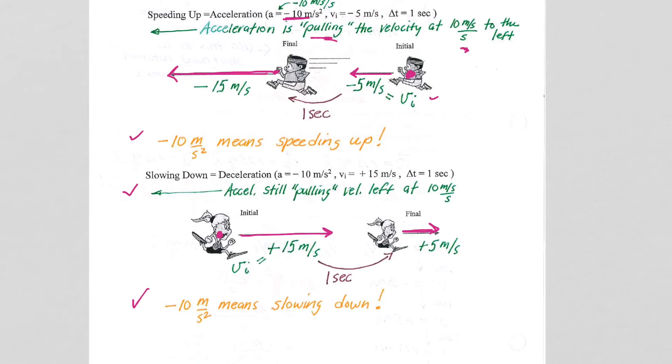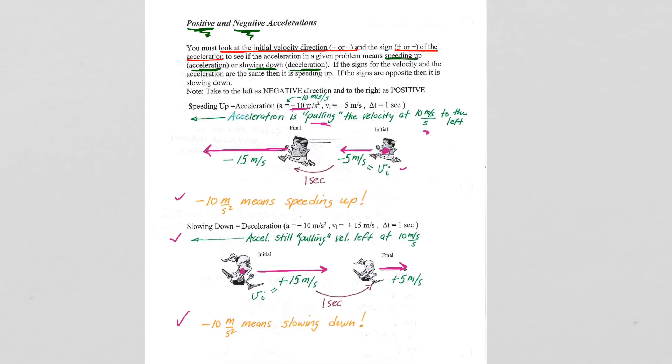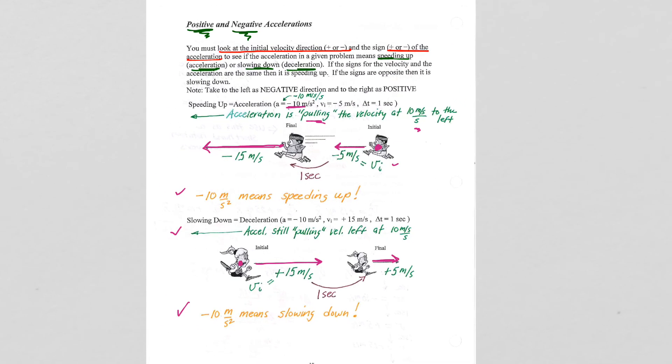So, this page of notes is really important. It was really short to go through and annotate, just three minutes into our notes. We're really done with the bulk of it. But it shows you that you can never look at a problem and be given the acceleration, negative 10, and right away say, oh, that means the object is speeding up. Or, oh, that means the object is slowing down. You have to look at the initial velocity value.